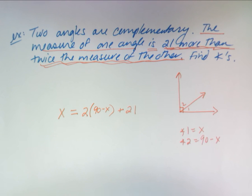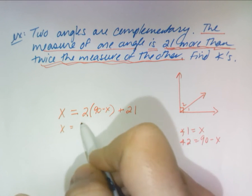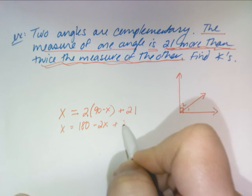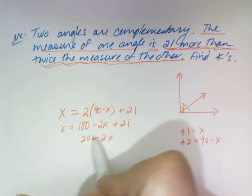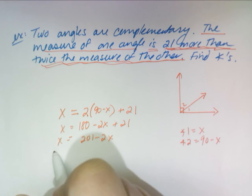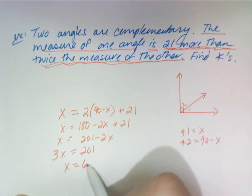And now solve it. X equals 180 minus 2X plus 21. 180 and 21 make 201 minus 2X. Add 2X over, you get 3X equals 201 and divide by 3. So X is 67.